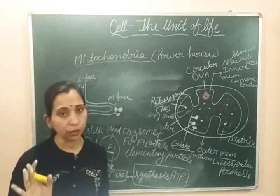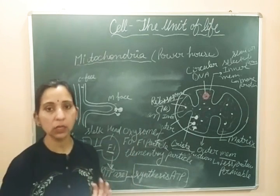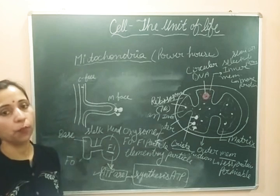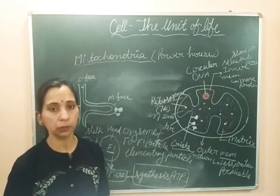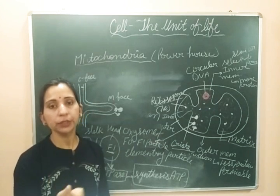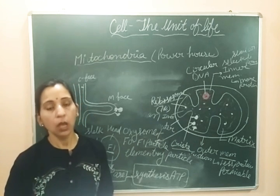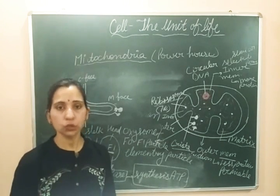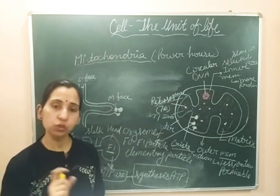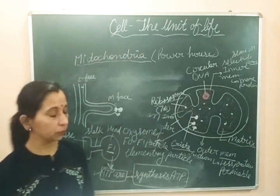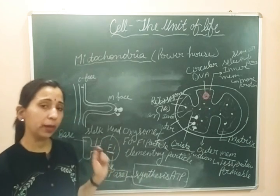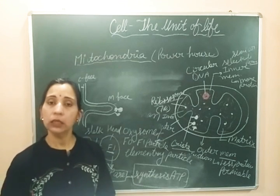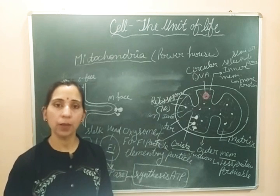The main function of mitochondria is the production of ATP, which is why they are called the powerhouse of the cell. Other functions include forming a spiral sheath in the middle piece of sperm to provide energy, and playing an important role in vitellogenesis — the process of yolk formation in eggs — alongside the Golgi body.